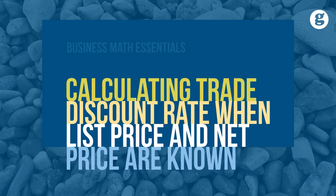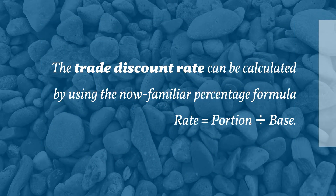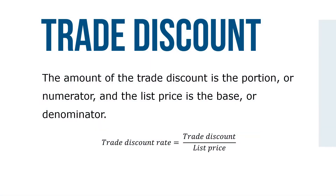Let's take a look at calculating trade discount rate when list price and net price are known. The trade discount rate can be calculated using the formula: rate equals portion divided by base. The amount of the trade discount is the portion, or numerator, and the list price is the base or denominator in the formula: trade discount over list price.